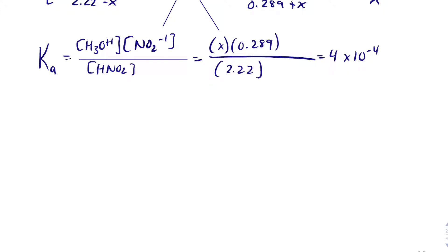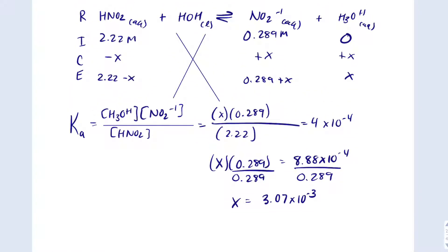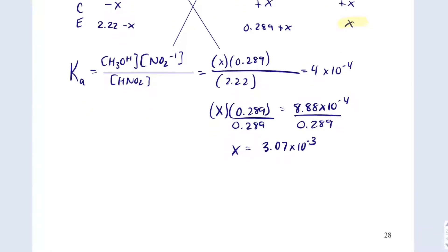I'm going to multiply each side by 2.22. When I do that, I'm going to have X times 0.289 equals 8.88 times 10 to the minus 4 divided by 0.289. And X is 3.07 times 10 to the minus 3. X represents hydronium. So if I take the negative log of that, I'll get the pH. pH equals negative log H+ or I could put H3O+. I know the pH will be a little bit less than 3, and the pH is 2.51.